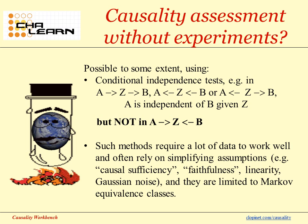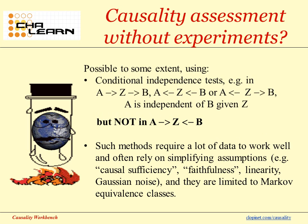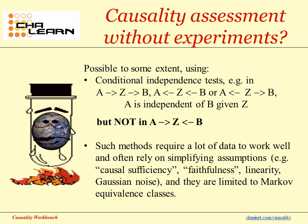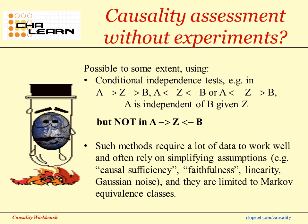In the literature, it is possible to some extent to assess causal relationships without experimentation using conditional independence tests. For instance, in graphs where A causes Z causes B, or B causes Z causes A, or Z causes both A and B, we always have A independent of B given Z. But not in the case where A and B both cause Z — there, A and B are dependent given Z. Such methods require a lot of data to work well, and often rely on simplifying assumptions such as causal sufficiency, faithfulness, linearity, and Gaussian noise. They are limited to Markov equivalent classes, meaning the three first graph types cannot be distinguished from each other on the basis of just one conditional independence test.